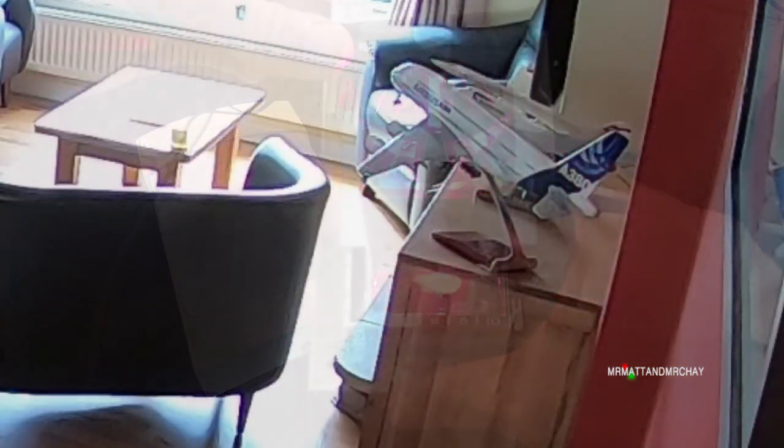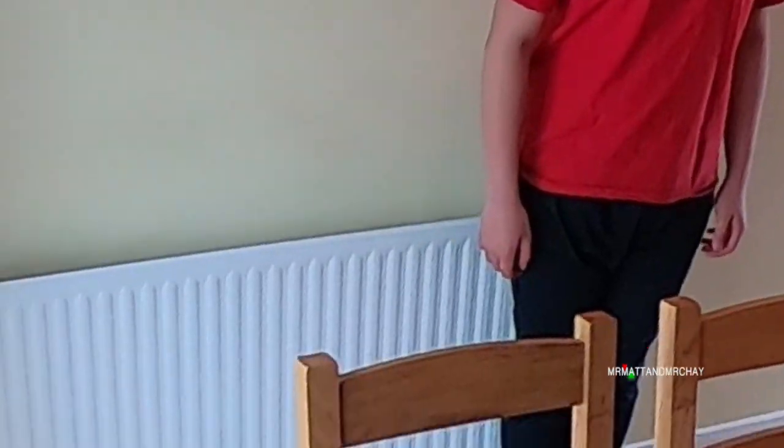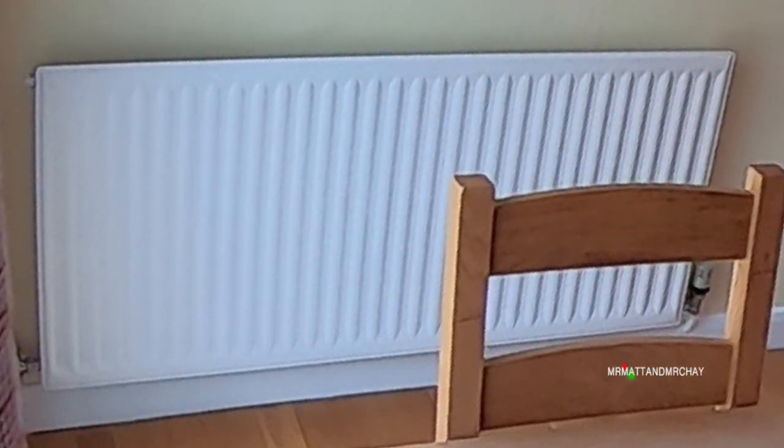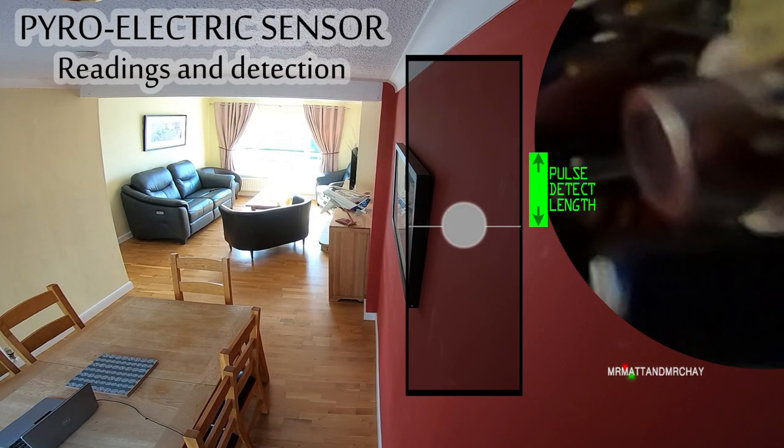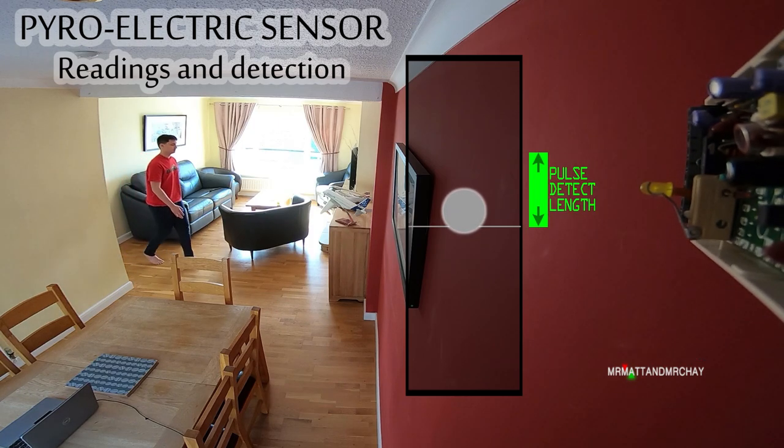Every object emits some kind of radiated infrared energy. The warmer the object, the more energy it radiates. This is invisible to the human eye, but very visible to the pyroelectric sensor on the circuit board of the PIR. When a warm object moves in front of a wall, the PIR can easily detect the difference in radiated energy from the wall it was once looking at.